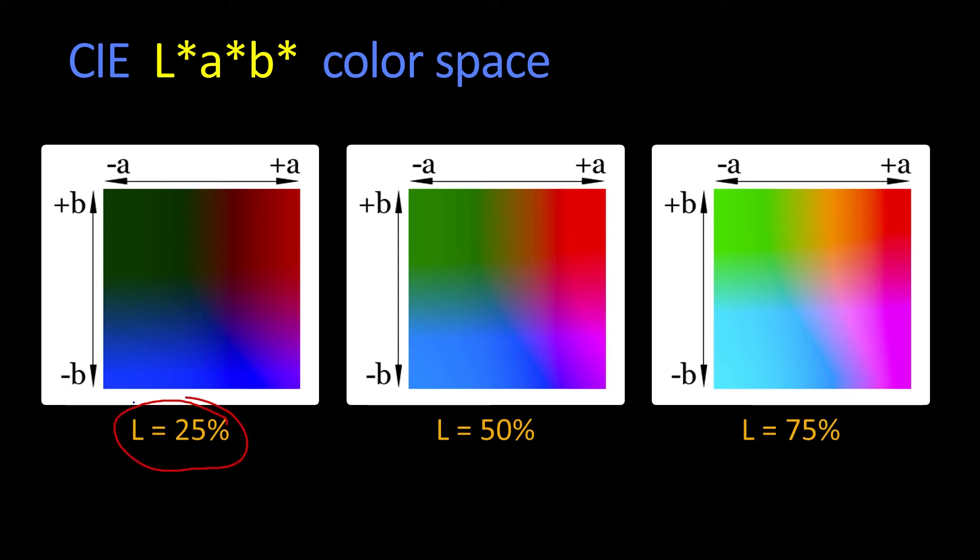Here you have a luminance of 25%, so it's kind of darker. You see the greenish, reddish, and bluish things as you move around. In the middle is kind of gray. And as luminance gets brighter, the middle gets brighter and you get these lighter variations in color.